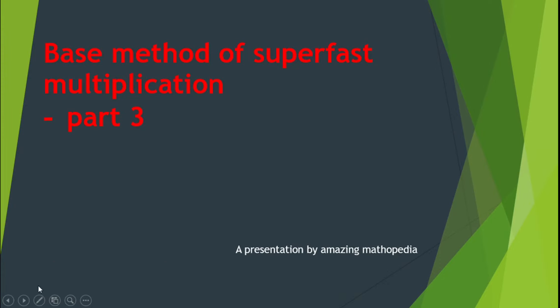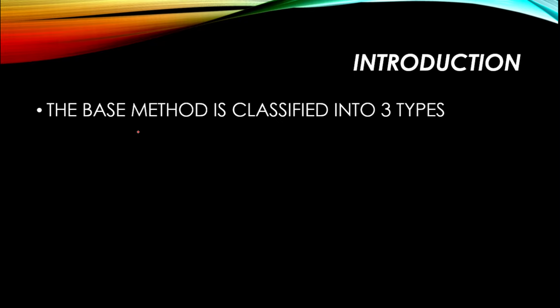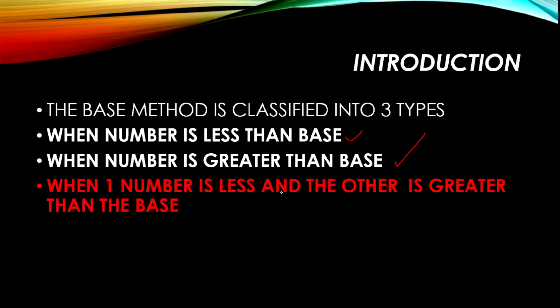Welcome back to our channel, The Amazing Methodopedia. This is base method of multiplication part 3. Now introduction. There are three types of base method. You already know when number is less than base, we have already done this. When number is greater than base, we have also done this. When one number is less and the other is greater than base, in this video we will do this. Now let's see what is there for us in this video.